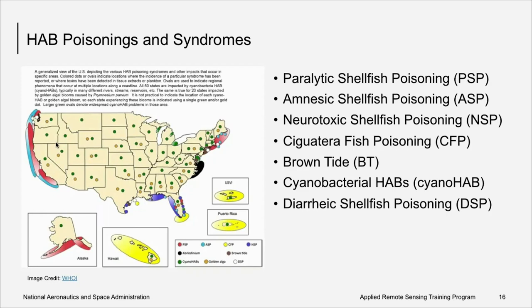Toxins produced by HABs cause a number of poisonings and syndromes. U.S. coastal waters experience most of the known toxin poisonings and syndromes, and these include paralytic shellfish poisoning, amnesiac shellfish poisoning, neurotoxic shellfish poisoning, ciguatera fish poisoning, the brown tide, cyanobacterial harmful algal blooms or cyanohabs, and diarrhetic shellfish poisoning. Some of these toxins are vectored through food webs and inflict harm through ingestion of contaminated food. A main goal of HAB monitoring using remote sensing observations is to use remote sensing imagery as a tool to aid in the monitoring and forecasting of HAB events to understand impacts to the ecosystem or human health.